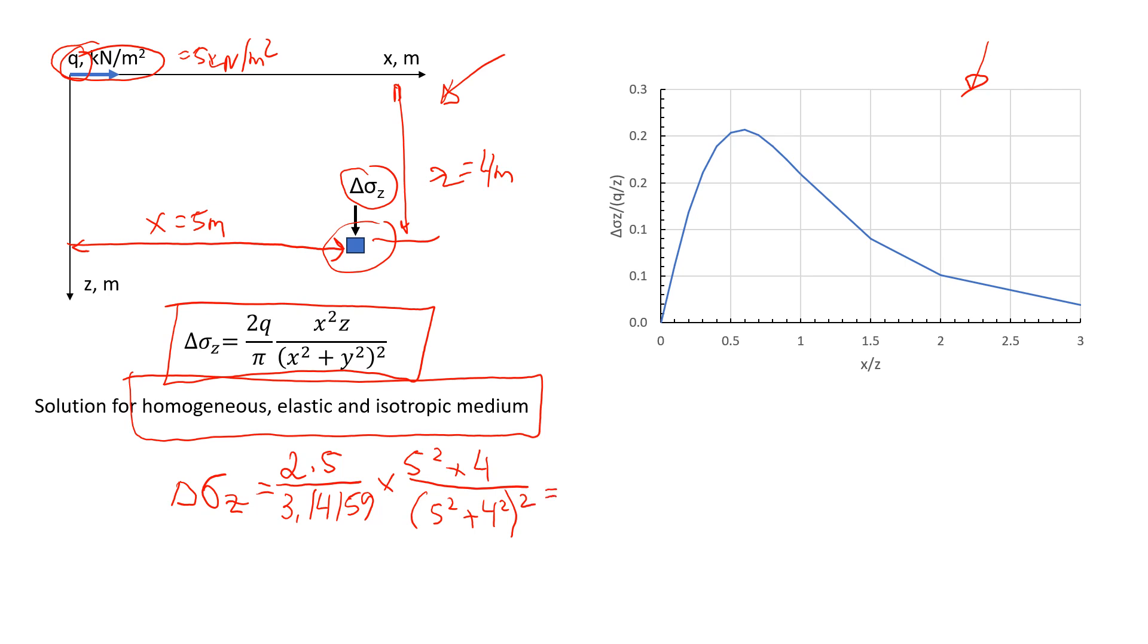According to my calculations, the answer will be 0.189 kilonewton per square meter. So that will be the change in the vertical stress here at these steps.